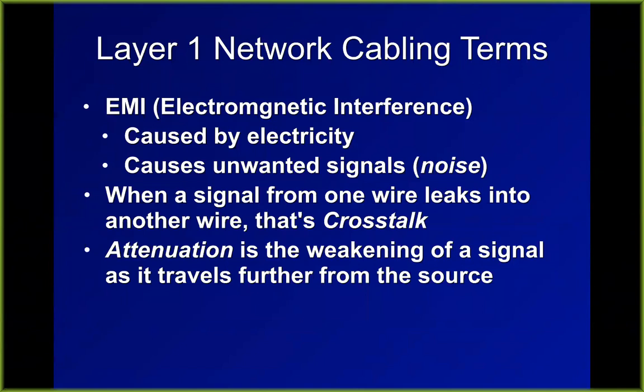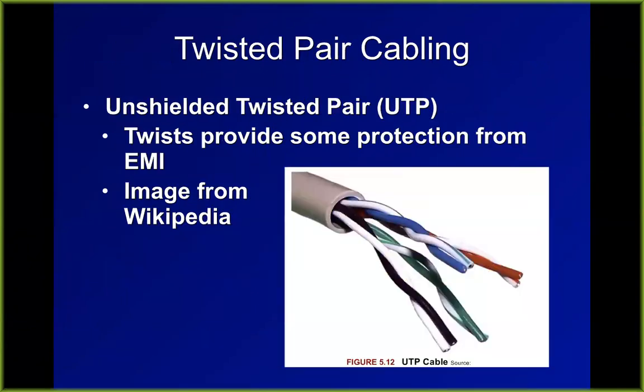Another problem is attenuation, which weakens the signal as it travels further from the source. Usually not a significant issue for digital transmissions, but it matters for fiber optic transmissions. Twisted pair cabling is the most common type. Unshielded twisted pair is the cheapest and most common — four pairs of wires, where one wire in each pair is a ground, and they're twisted a different number of turns per inch so that crosstalk tends to cancel out.